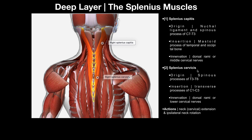Before we go any further, I want to make this perfectly clear. Whenever you see the term 'capitis' — cap, like on the head, like you wear a cap on your head — capitis means that that muscle inserts somewhere on the skull. There's only one exception, which we'll talk about in a later video, but for now capitis means it inserts on the skull.